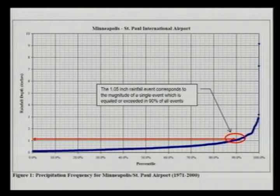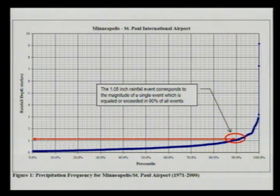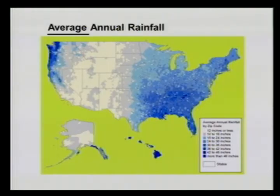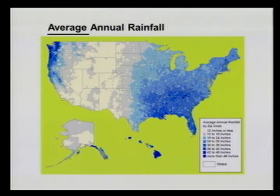This chart shows the frequency of rain events. The main point is that 90 percent of our rain events in Minnesota are one inch or less. We occasionally get some big rain events — maybe a three-inch event in August — but the bulk are one inch or less. This general map of the United States shows average annual rainfall: Minnesota is in the lighter blue category at 24 to 30 inches on average, and as you go west the gray and white colors show annual precipitation dropping off significantly.